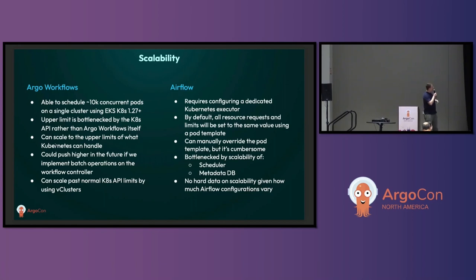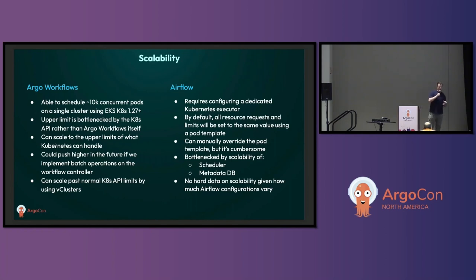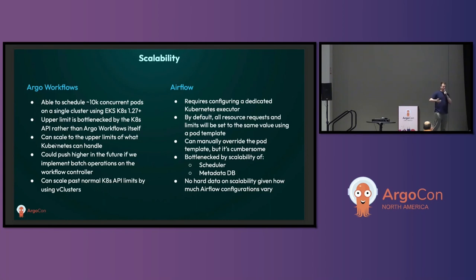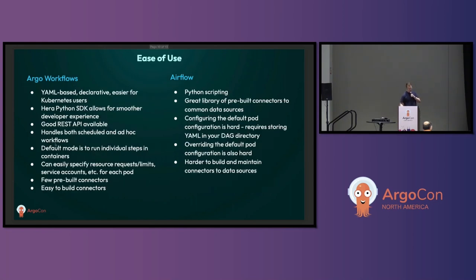Scalability — this is the one that people care about. We did some benchmarking studies and found that with Argo Workflows, the core limit is going to be the Kubernetes API rather than any of the internal components within Argo Workflows. So if you're thinking about scale, Kubernetes is scale, and Argo Workflows really is just Kubernetes. With Airflow, it really depends on how you're configuring it. The main bottlenecks are the scheduler and the metadata database. If you've configured those properly, you can hit high levels of scale comparatively, but it's not going to quite give you the same outputs as Argo Workflows.